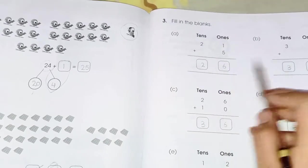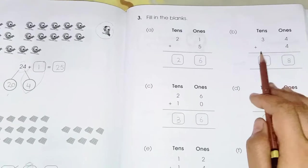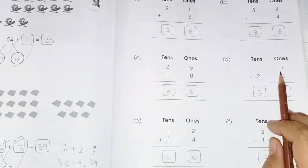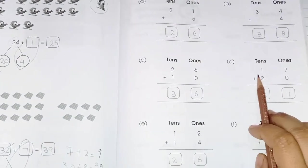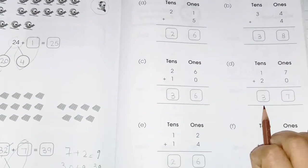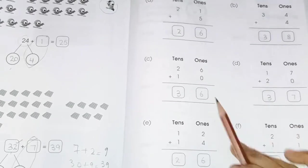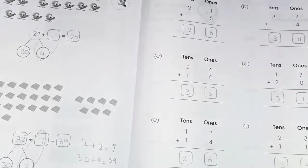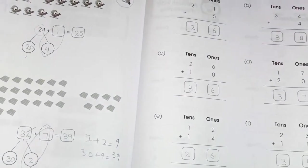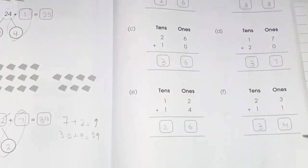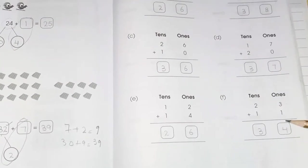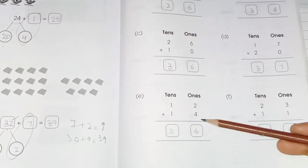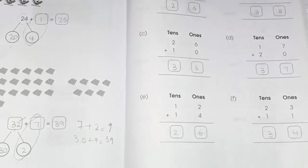Simple addition examples: 5 plus 1 equals 6. Then 4 plus 4 equals 8. Then 7 plus 0 equals 7. Then 1 plus 2 equals 3. Then 6 plus 0 equals 6. Then 2 plus 1 equals 3. Then 3 plus 1 equals 4. Then 2 plus 1 equals 3. Then 2 plus 4 equals 6. Then 1 plus 1 equals 2. This is the simple addition worksheet.